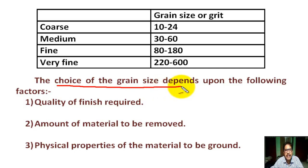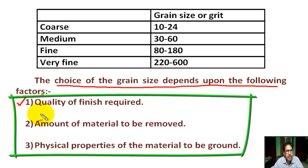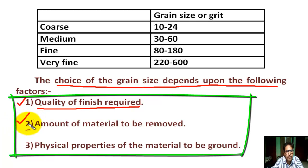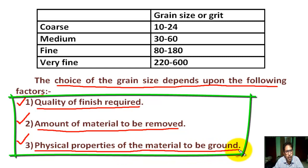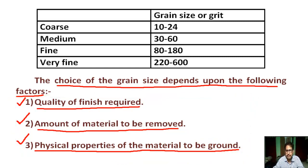The choice of grain size depends upon the following factors: number one, quality of finish required; number two, amount of material to be removed; number three, physical properties of the material to be ground.